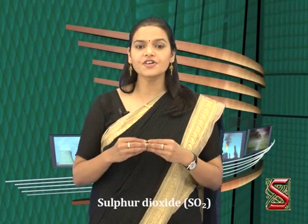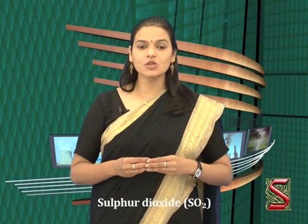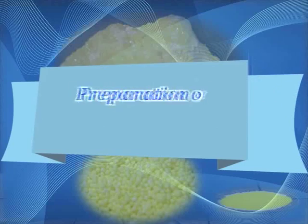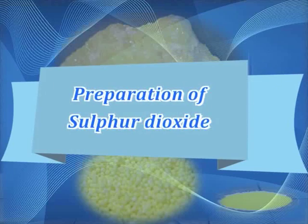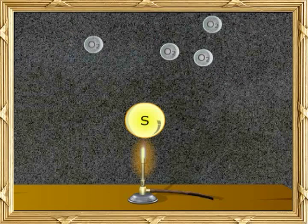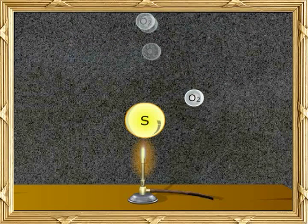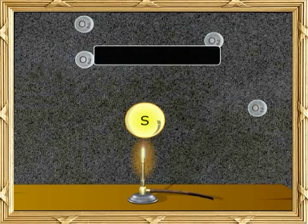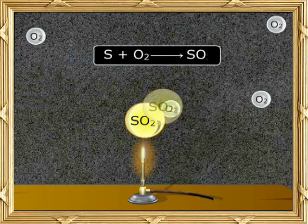One of the most important compounds of sulfur is sulfur dioxide, with the symbol SO2. A method to prepare sulfur dioxide is to burn sulfur in air. S plus O2 gives you SO2.